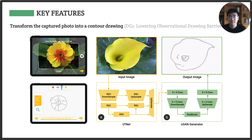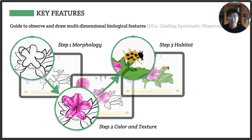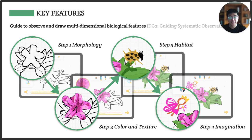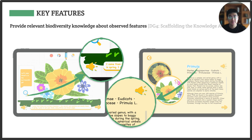The app features a few key components. First, it converts captured photos into contour drawings to simplify the observational drawing process. Second, it guides children to observe multidimensional biological features such as morphology, colors and textures, and habitats, and allows children to draw freely. To aid in detailed observation, it provides a digital magnifier for observing intricate features like stamens and leaf veins. Lastly, it provides relevant biodiversity knowledge about the observed features and plants.